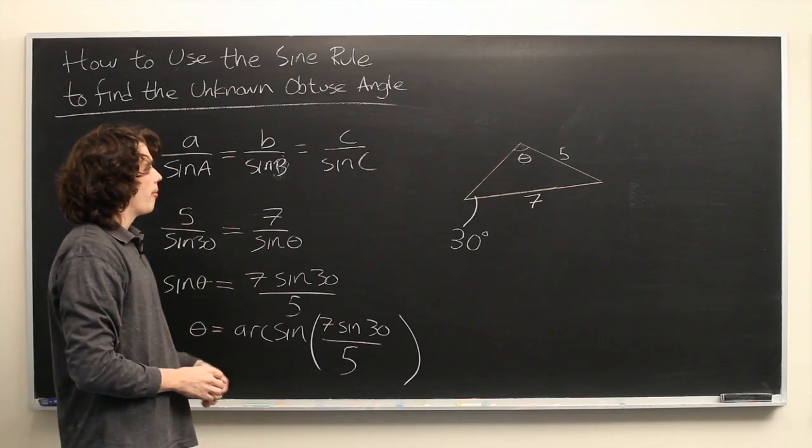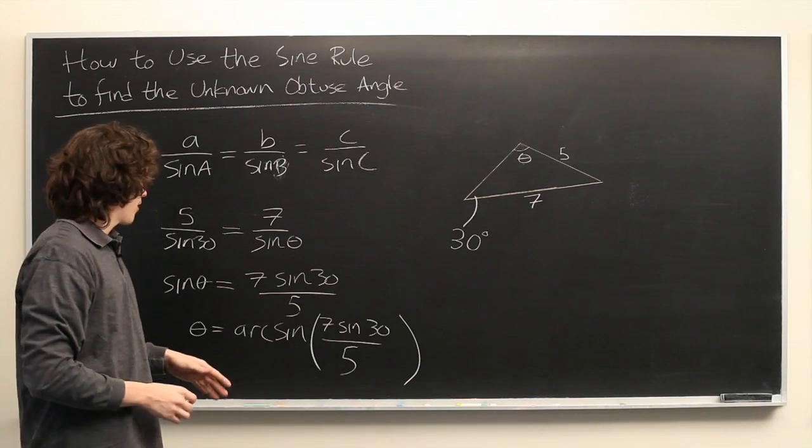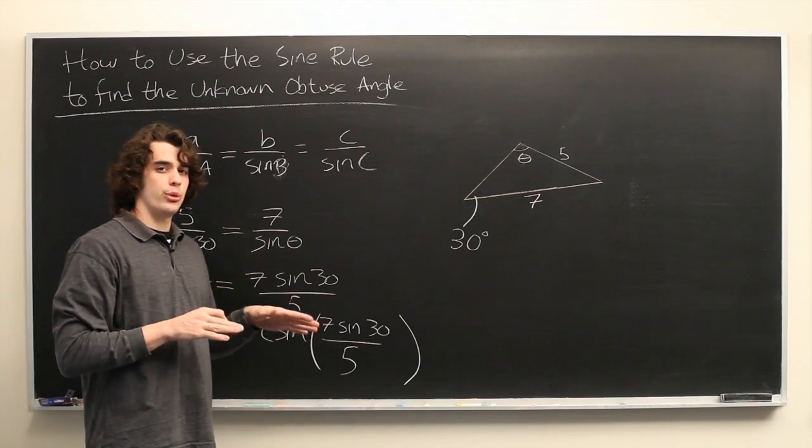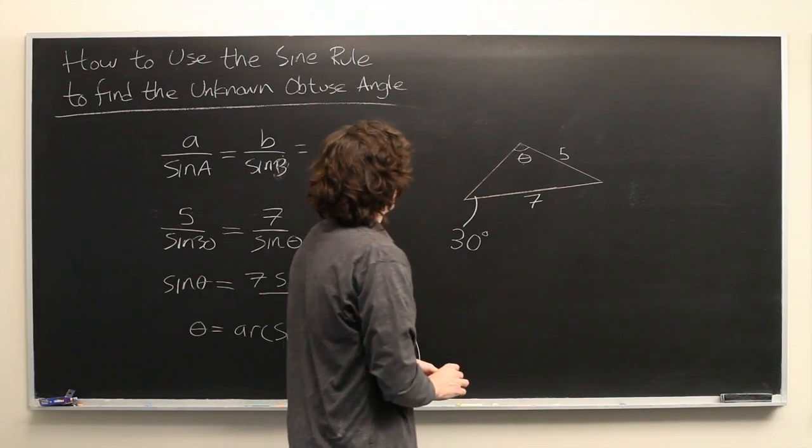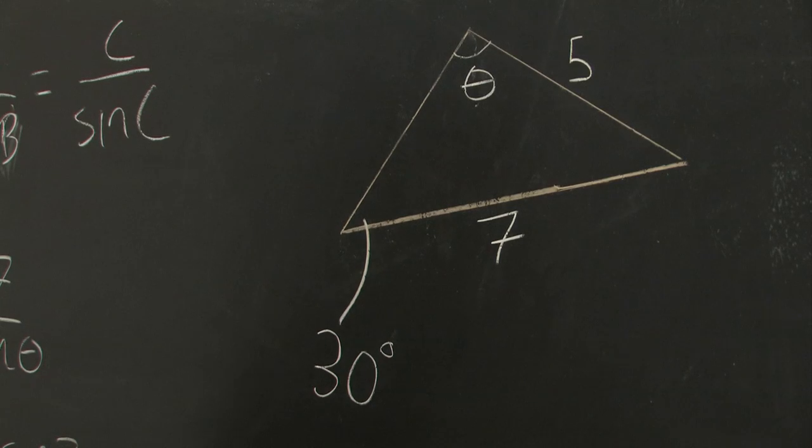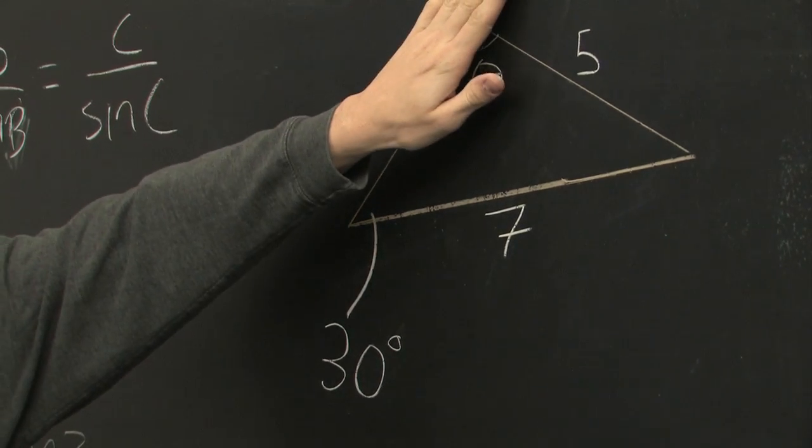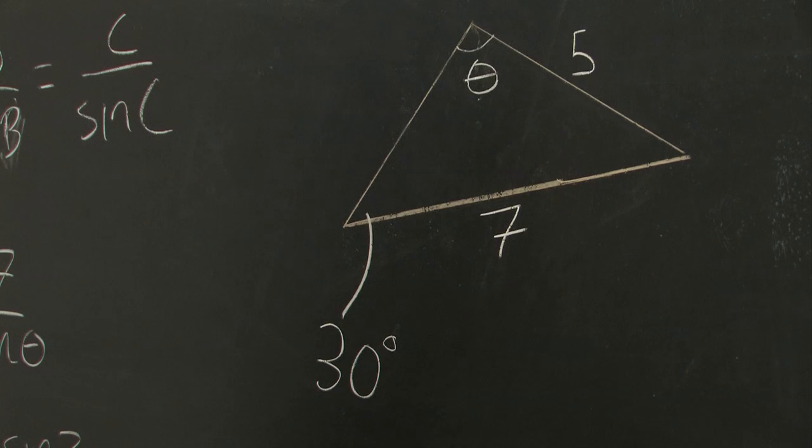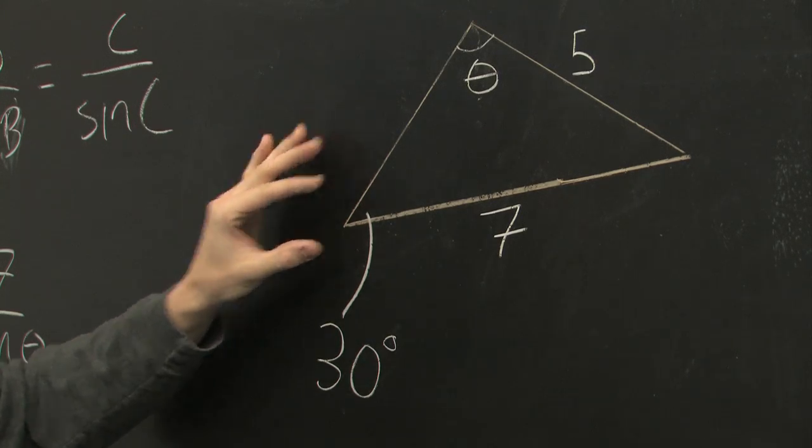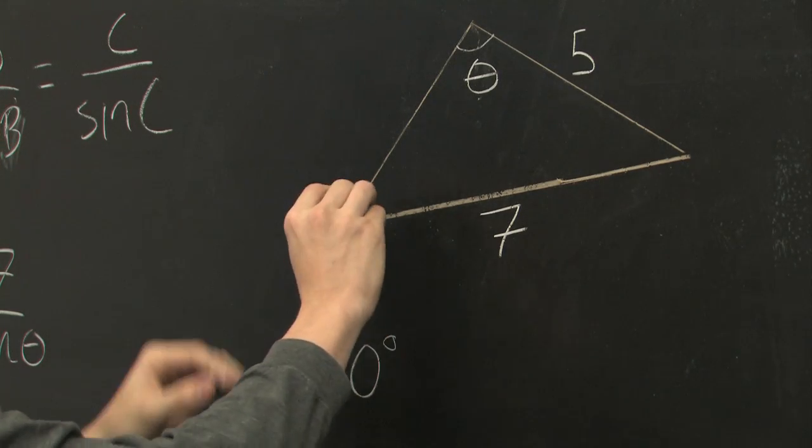One interesting thing to note about this particular arrangement is that this will actually give us two different answers, and here's why. Now if these are the only three pieces of information that we know about the triangle, let's ignore for the moment that we know that this angle is obtuse. An interesting thing can happen. This angle is 30, let's extend this line outwards.